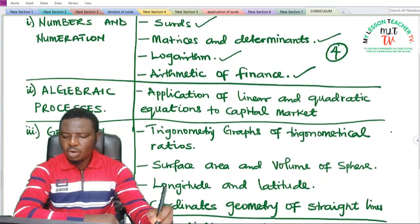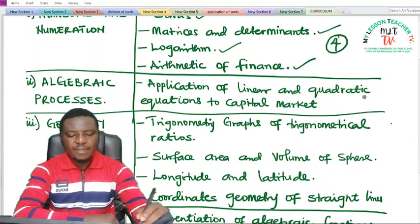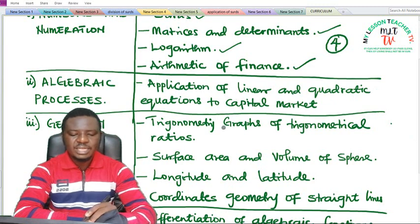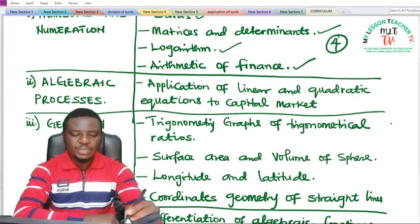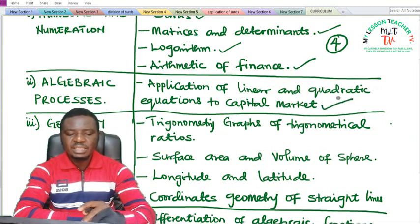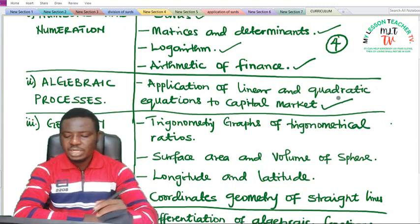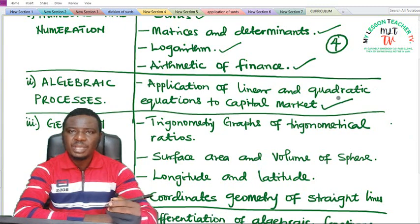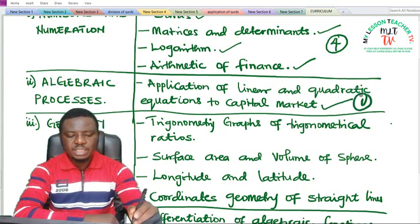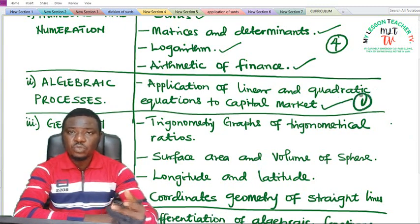Also under Algebraic Processes we have application of linear and quadratic equations to capital markets. We have already learned linear and quadratic equations in SS2. So in SS3 we shall be looking at how it can be applied to the capital market, and this will mostly favor those of you in the commercial and the art classes.